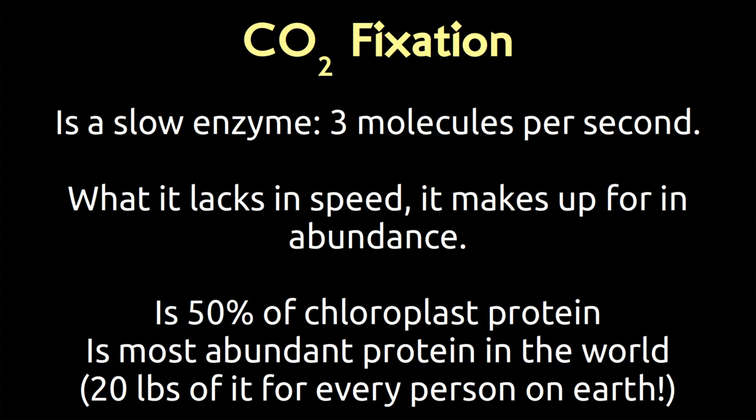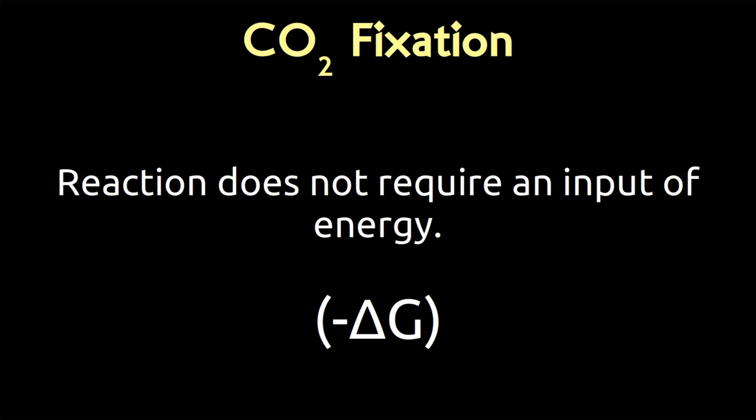There's tons of rubisco all across the earth — because A, it's slow, and number two, there are tons of things trying to carry out photosynthesis across the face of the earth. Interestingly enough, the reaction catalyzed by rubisco does not require an input of energy. It has a negative delta G.